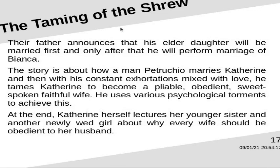The story is about how a man, Petruccio, marries Catherine and then, with his constant exhortations mixed with love, tames Catherine to become a pliable, obedient, sweet-spoken, faithful wife. He uses various psychological torments to achieve this. At the end, Catherine herself lectures her younger sister and another newlywed girl about why every wife should be obedient to her husband.